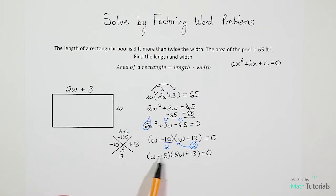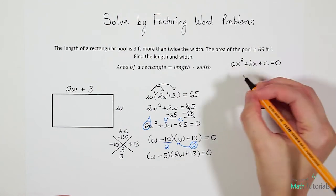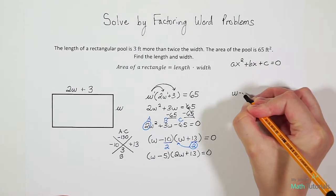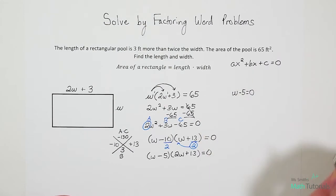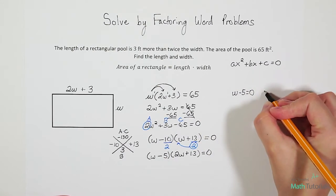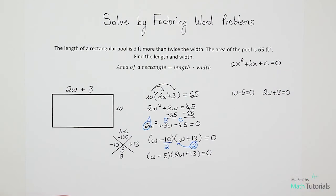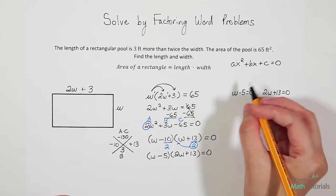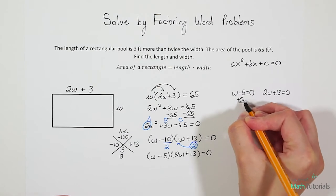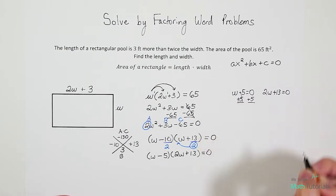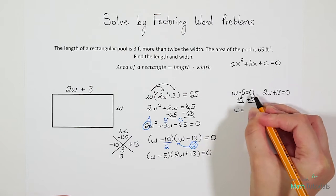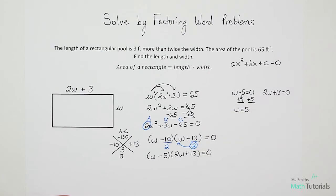Now for our final steps, we're going to take each of these parentheses sets, set them equal to 0, and solve. I'm going to do that right over here on the side. So we've got W minus 5 equals 0. And we've got 2W plus 13 equals 0. Now to solve this first equation, I would just want to add 5 on both sides. And I get W equals 0 plus 5 is a positive 5.